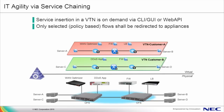Here we'll show you some additional details of how to achieve IT agility using service chaining. This is based on NEC's Virtual Tenant Network, or VTN, technology, which is a network virtualization technology that enables multi-tenancy. With programmable flow, service insertion and the building of service chains is achieved on demand via either centralized CLI, via GUI, or a series of Web API calls, which is NEC's term for a REST API. Also, users have granular control over which flows get redirected to specific services or network functions. This is all controlled by policy, or what NEC calls flow filters.